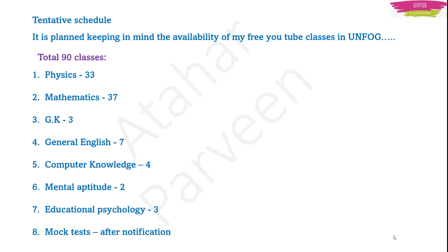I have planned 3 General Knowledge classes, 7 General English classes — I will try to complete the entire General English syllabus in those 7 classes. Then Computer Knowledge: 4 classes, though I may increase the number if needed. For Mental Aptitude, I have kept 2 classes for now, but once the notification and model paper come, I may increase that count as well.